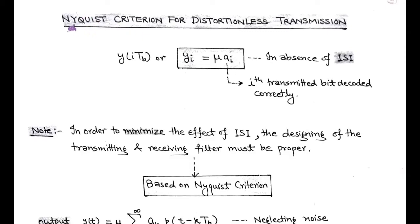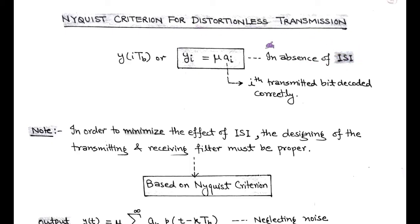Welcome once again. In this session, we are going to discuss Nyquist's criteria for distortionless transmission. In baseband transmission of digital data, the sampled output yi is mu times of ai, which means that the ith transmitted bit is decoded correctly in the absence of inter-symbol interference — that is called distortionless transmission of digital data. In order to minimize the effect of ISI, the designing of the transmit filter and receive filter is totally based on the Nyquist criteria.